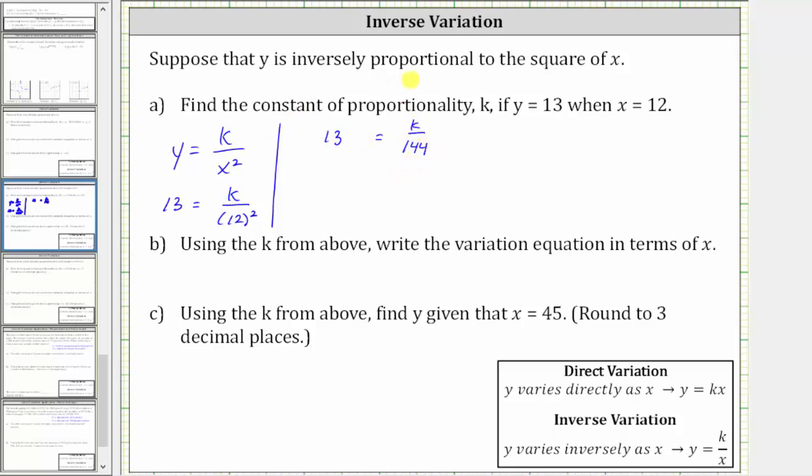To solve for k, we multiply both sides by 144. Simplifying on the right side, 144 divided by itself simplifies to one, the right side simplifies to k.